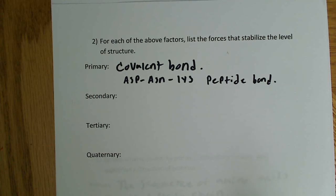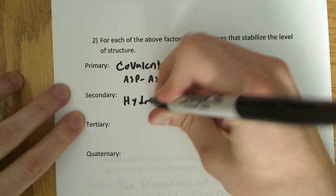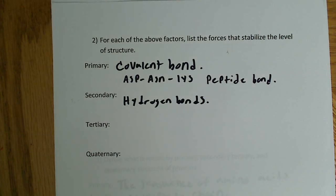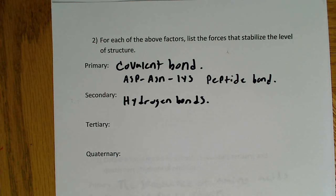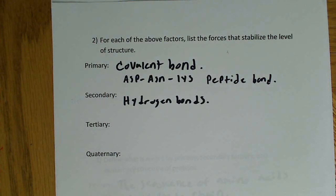The secondary structure is stabilized by only one intermolecular force — hydrogen bonding. Specifically, it's hydrogen bonding between the backbone atoms of the secondary structures, such as the backbone of the alpha helix and the backbone of the beta sheet. In an introductory biochemistry course, you'll mostly focus on those two.